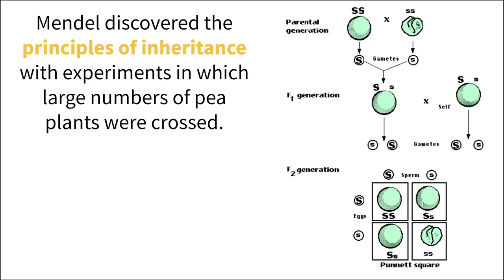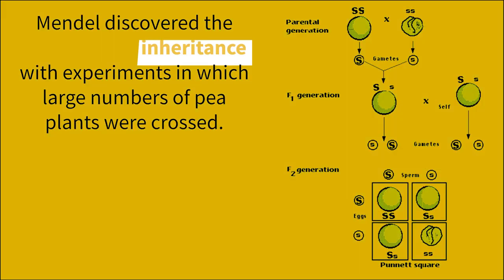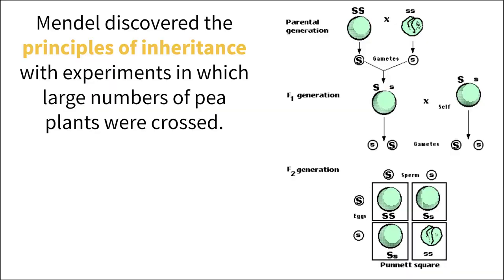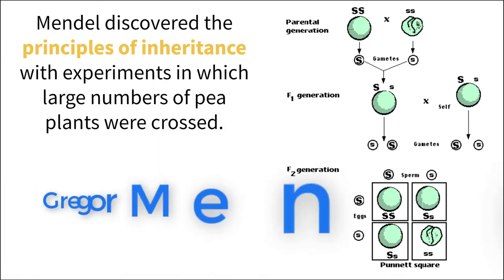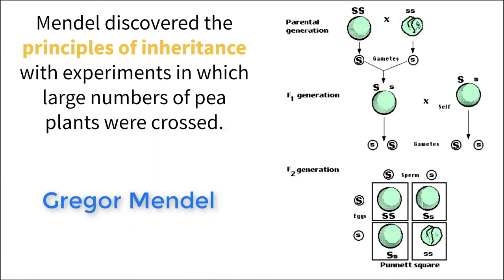Many people take for granted the knowledge that we have about Patterns of Inheritance today. While it has helped us in so many ways, there was a time not too long ago when this information did not exist and life was much different on so many levels of understanding. Gregor Mendel was an Austrian monk who, through thoughtful experimentation, developed the general principles of inheritance that we still follow today.